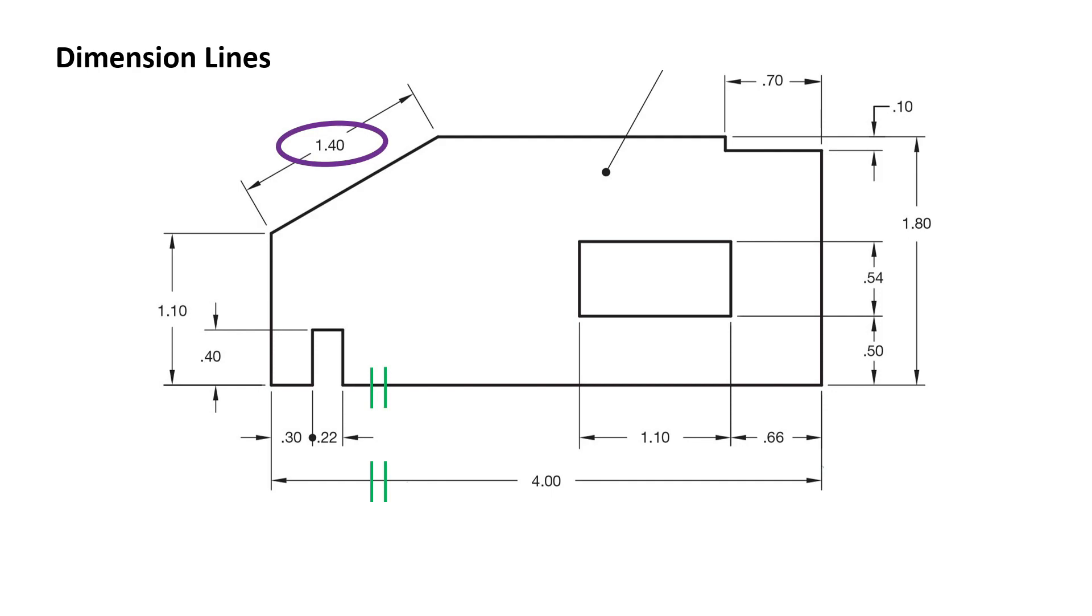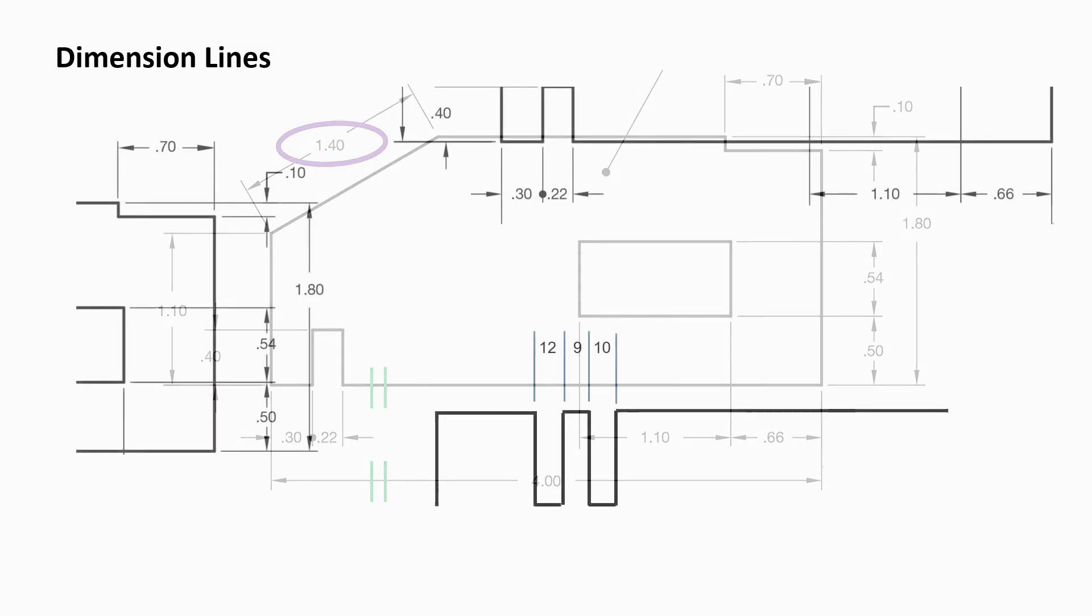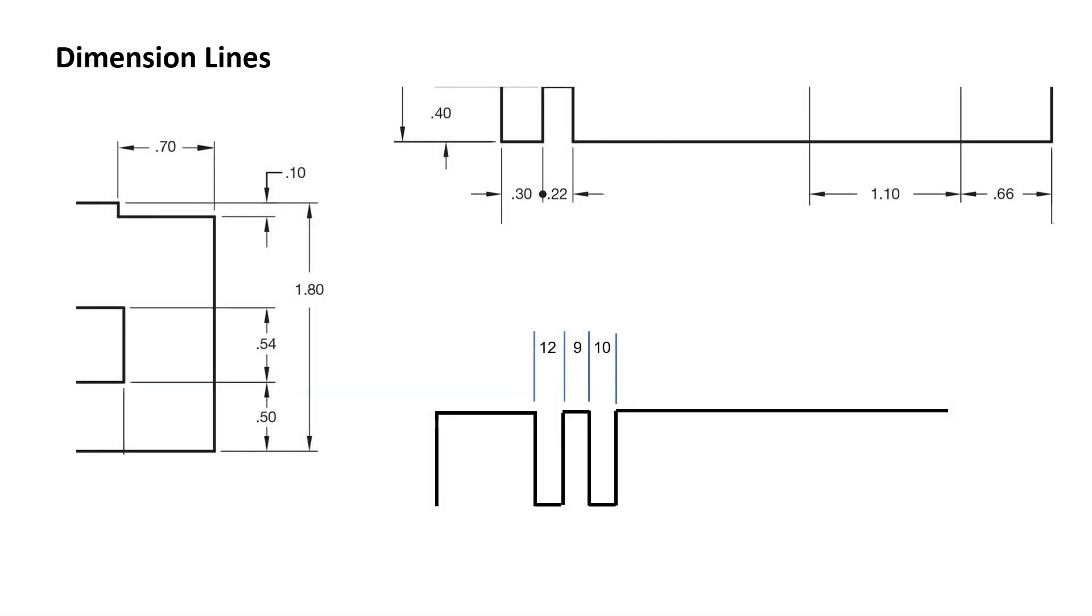When there is not enough space to insert a dimension between dimension lines, the dimension line may be placed outside the extension line. The dimension can also be placed outside the extension line if the space between the extension lines is limited.